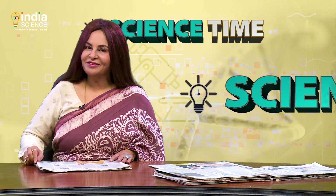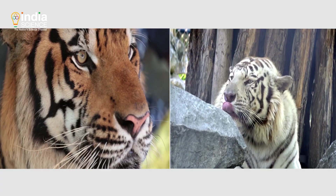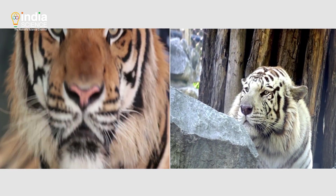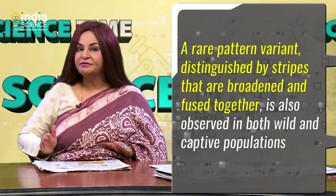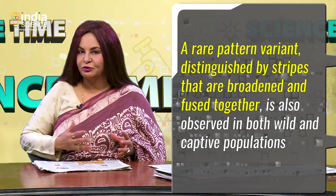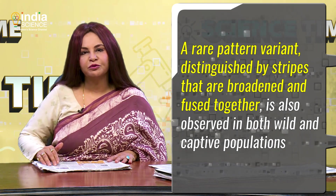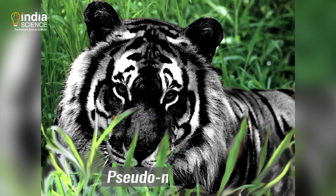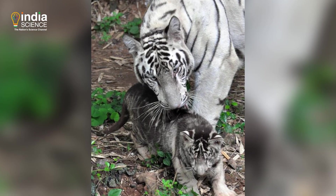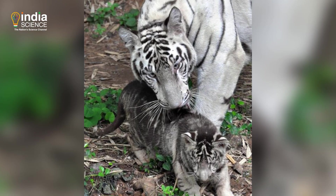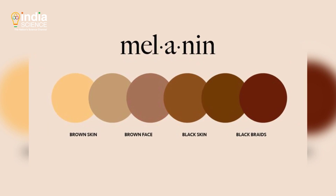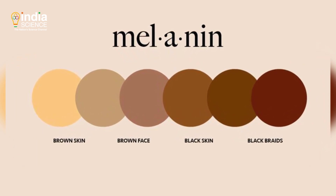Tigers have a distinctive dark stripe pattern on a light background of white or golden. A rare pattern variant, distinguished by stripes that are broadened and fused together, is also observed in both wild and captive populations. This is known as pseudo melanism, which is different from true melanism — a condition characterized by unusually high deposition of melanin, a dark pigment.